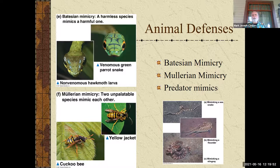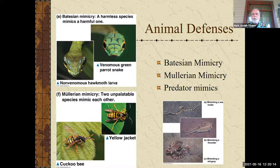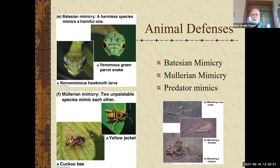There are also predator mimics. On the bottom is an octopus that will mimic different things depending on what's around. If it thinks it's going to be attacked, it can mimic a sea snake — sea snakes are venomous and things will leave them alone. If it wants to bring in prey, it can mimic a flounder, a flat bottom-dwelling fish. And then it can also mimic a stingray, which might keep predators away from it.